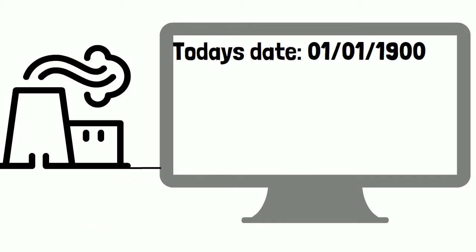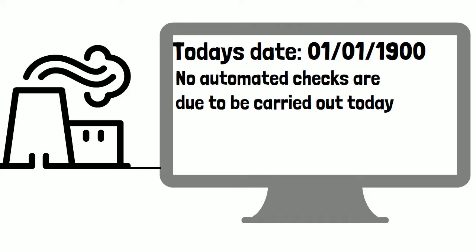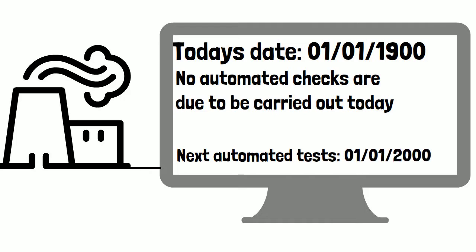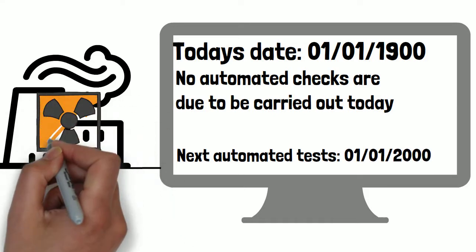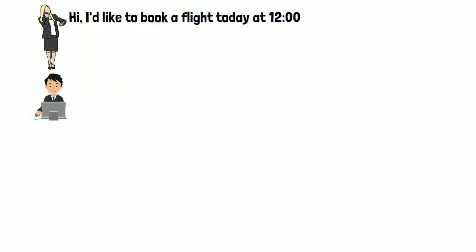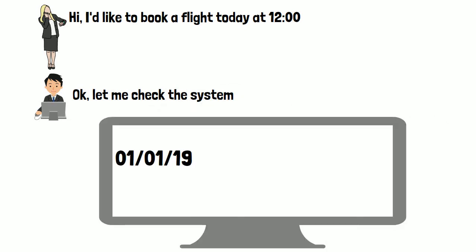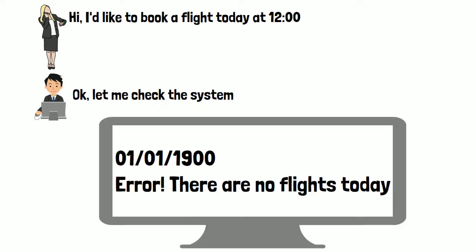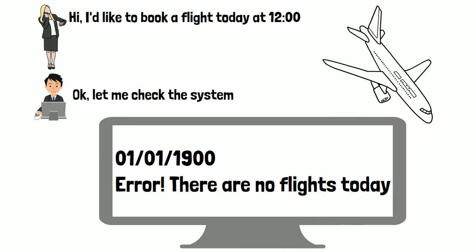If their computers read the date as 1900, no automated checks would be carried out by their computer systems as they were all scheduled for future dates, potentially causing failures and blackouts all over the world. Airlines and other transportation were under threat as booking and scheduling systems may go down if trying to read data from 1900 rather than 2000. Some people even predicted planes would fall from the sky due to software crashes. Effectively, if it was an electronic device, it was suspected to be at risk of software errors or failing completely the second the date changed over to 2000.